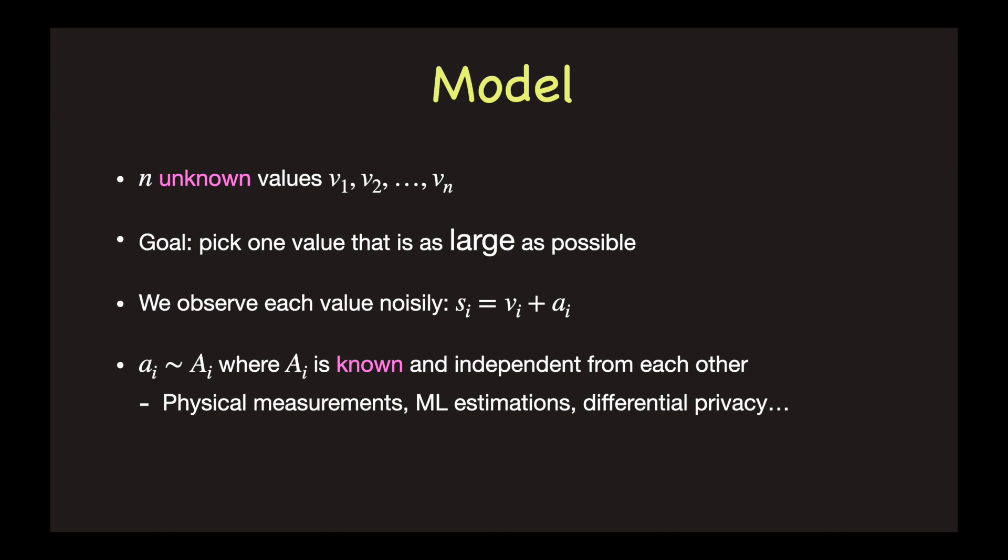As another example, in differential privacy, the observed value is exactly in this form, the true value plus a stochastic noise. These noise distributions can be different if the observations are from different channels with different privacy guarantees.